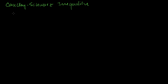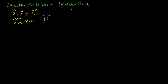If I have two vectors x and y, they're both members of Rn, and they're both nonzero vectors. That was an assumption we had to make when we did the proof, otherwise there's a potential of dividing by one of their magnitudes. But if we assume that they're both nonzero, then we can say that the absolute value of their dot products is going to be less than or equal to the product of their individual lengths.